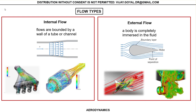Let's step back and go over the flow types. We have what we call internal flow — airflow that stays inside a tube or something. For example, gas turbines and engines have internal flow. We can see several simulations for internal flows done using CFD, computational fluid dynamics. Then we have external flows.